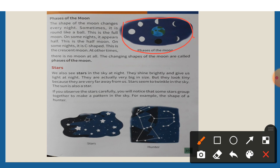See here children, right side. The shape of the moon changes every night. Sometimes it is round like a ball - this is the full moon. On some nights it appears half - this is the half moon.